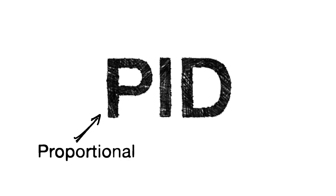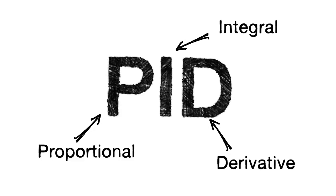But what does PID mean? P stands for proportional, I for integral and D for derivative.